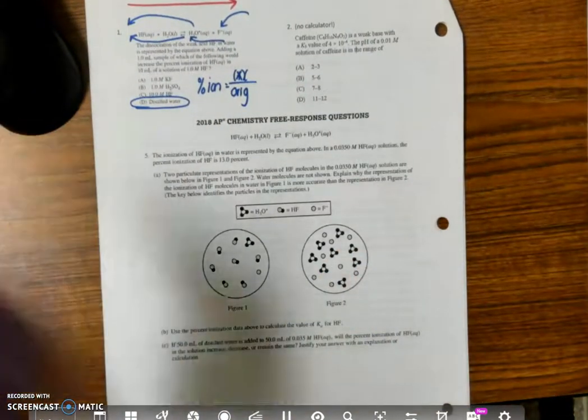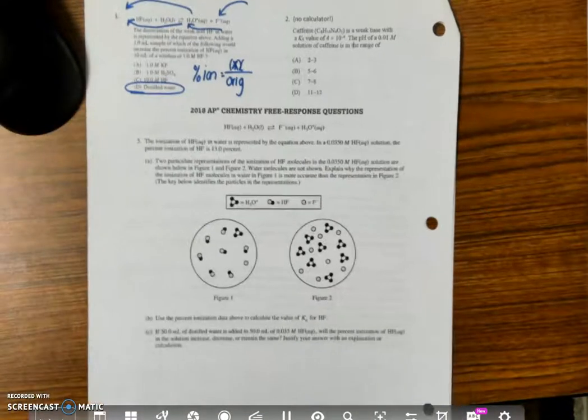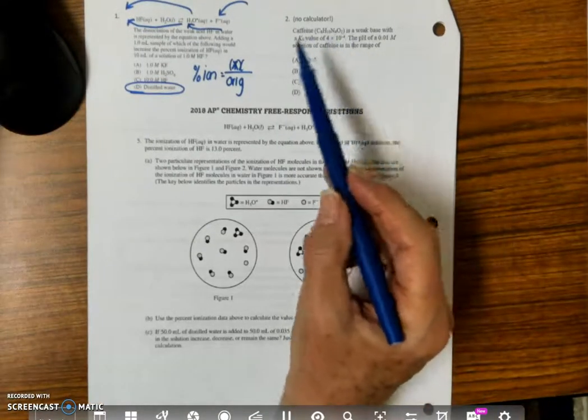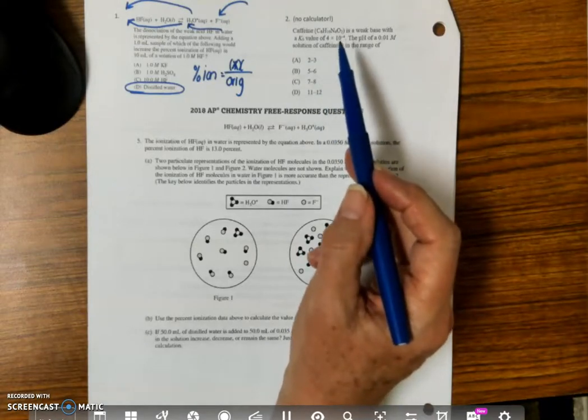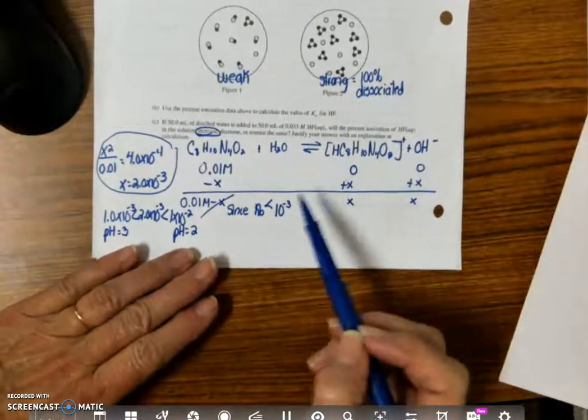All right, the next one is caffeine. Now, again, this is all, this all should be done without a calculator. You have to be able to do this without a calculator. So let's look at how we do that. So this is just another rice table.